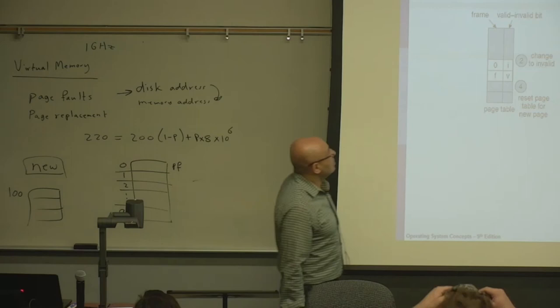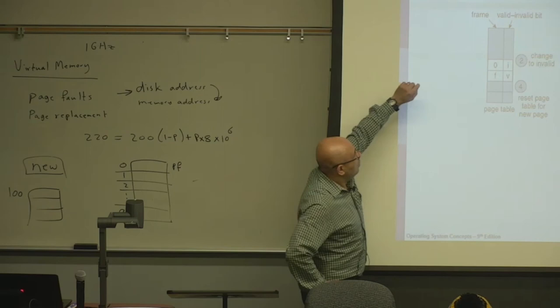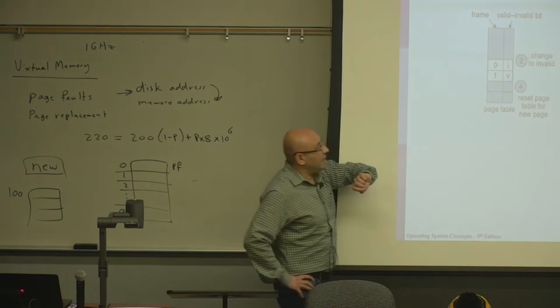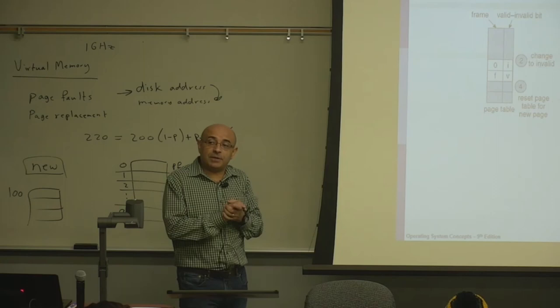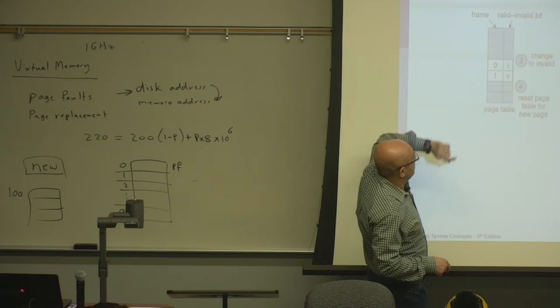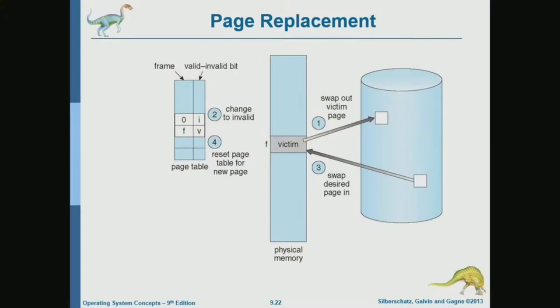Here we have two different pages: one is not in physical memory — it's invalid — and one is valid. The program is accessing the invalid one, so there's a page fault. The operating system looks for a free frame, doesn't find one, and picks a victim. It copies the victim to disk only if it's dirty, then loads the new page into that frame. Now the previously invalid page is valid, and the one that was valid is now invalid because we did the replacement.